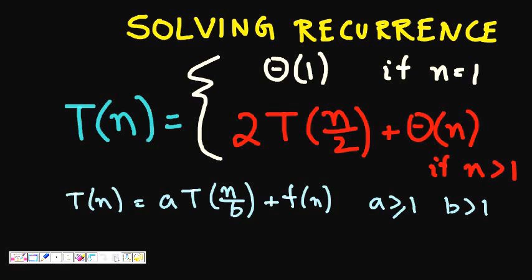Most of the time we get an equation of the form T(N), where T(N) is the time complexity of a particular algorithm and N is the input size. T(N) = A·T(N/B) + F(N), where A is greater than or equal to 1 and B is greater than 1, and F(N) is some function of N. This means that to solve a problem with input size N, we subdivide it into A sub-problems, each of size N/B.